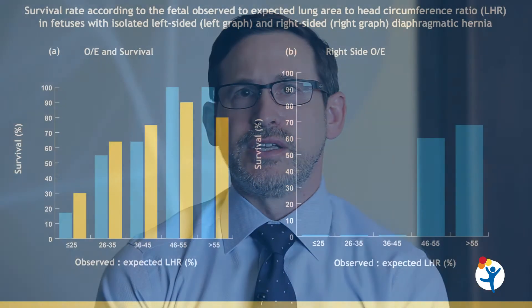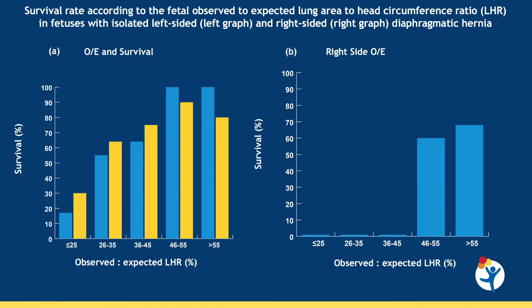At the Colorado Fetal Care Center, we consider a diaphragmatic hernia severe when the observed to expected lung head ratio is less than 25% for a left-sided lesion and less than 45% for a right-sided diaphragmatic hernia with the liver herniated within the chest. As you can see in this chart, there are marked differences in survival once a left-sided hernia drops below 25% O to E LHR and below 45% for right-sided lesions.